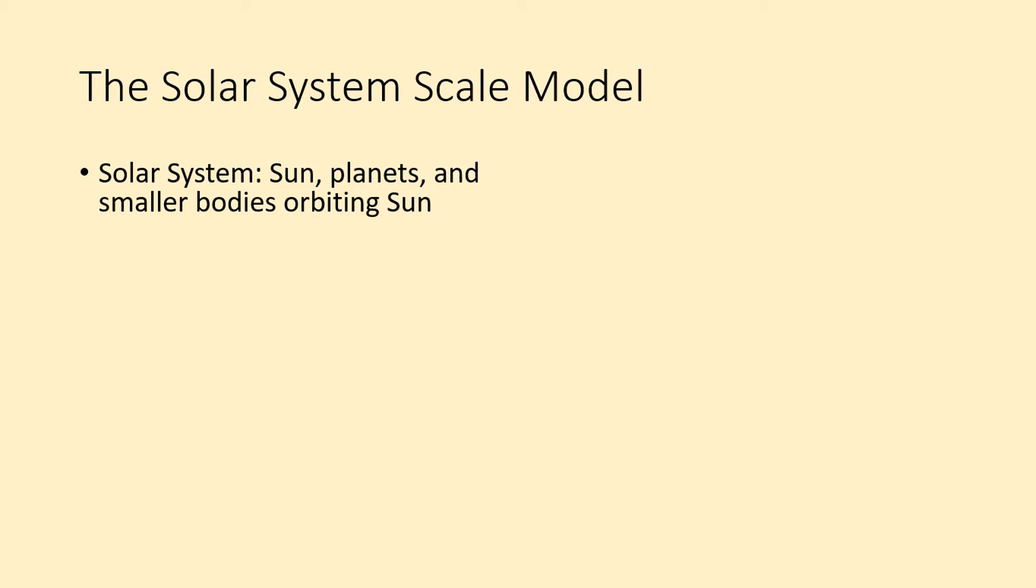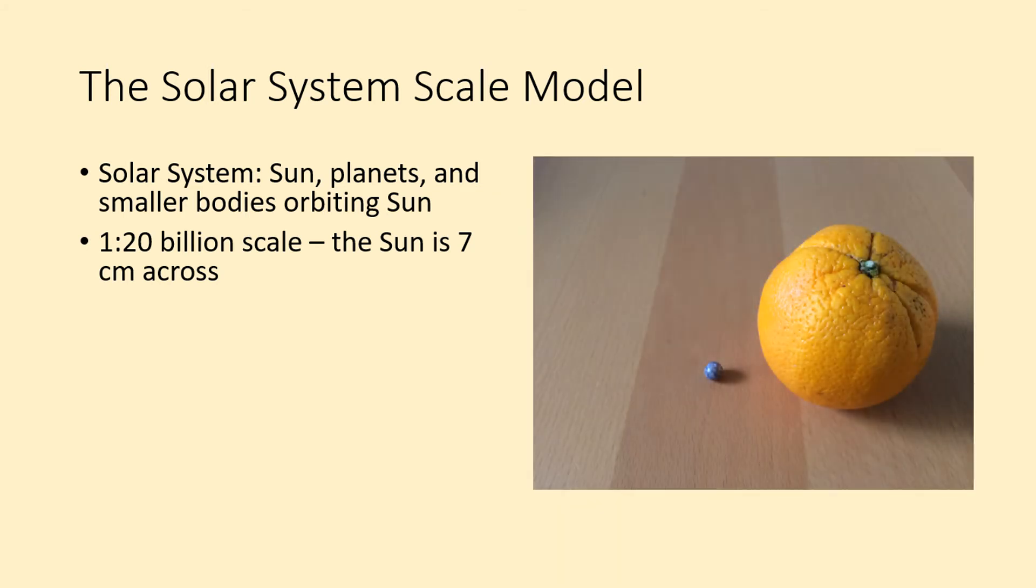If we want to shrink the solar system down to a manageable size, we're going to have to make it 20 billion times smaller than its real size. On that scale, the Sun is just seven centimeters across, about the size of this orange.